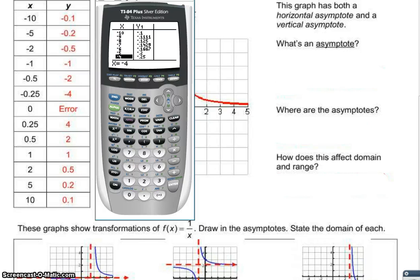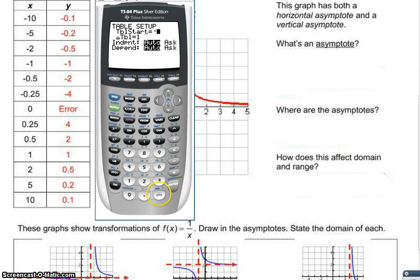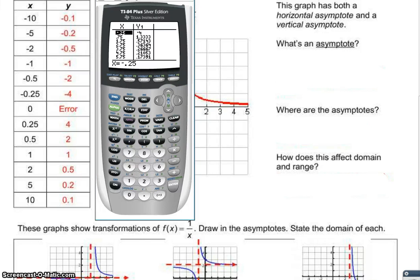Now if you look at -0.5 and -0.25, if I go to table set (second window), I can actually tell it to start at -0.25. Then when I go back to the table (second graph), it'll actually give me the number, and that's where I get -4.